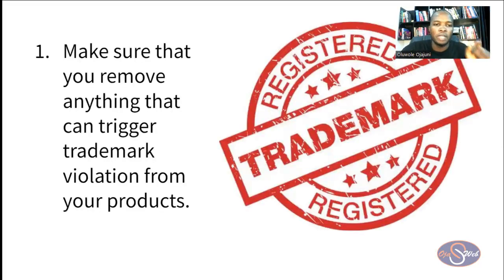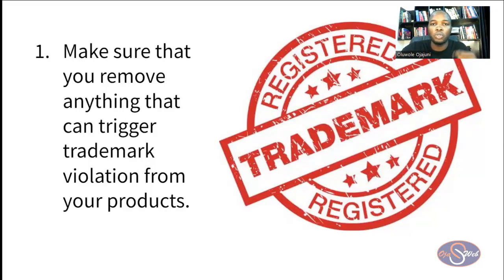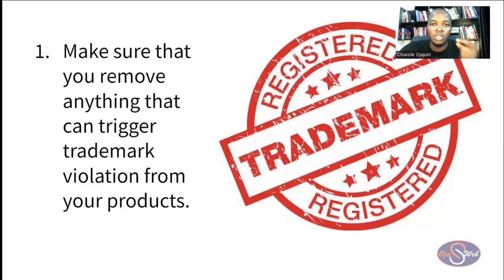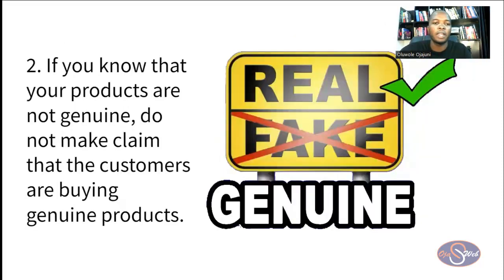The first recommendation is to make sure you remove everything that can trigger trademark violations from your photos and listings. You may have photos on your website that have already violated the counterfeit policy. Look for terms that can trigger trademark violations — things like the company name, their logo, or other trademarked elements. For example, if you are selling something related to Samsung and using their branding on your website, you might be violating their trademark. Remove all of those things from your products.